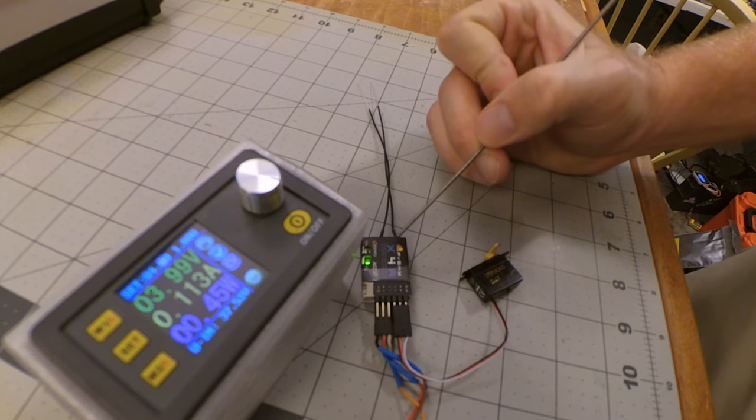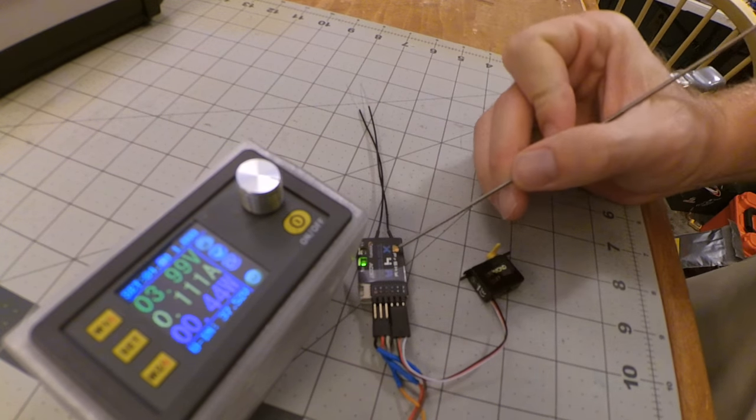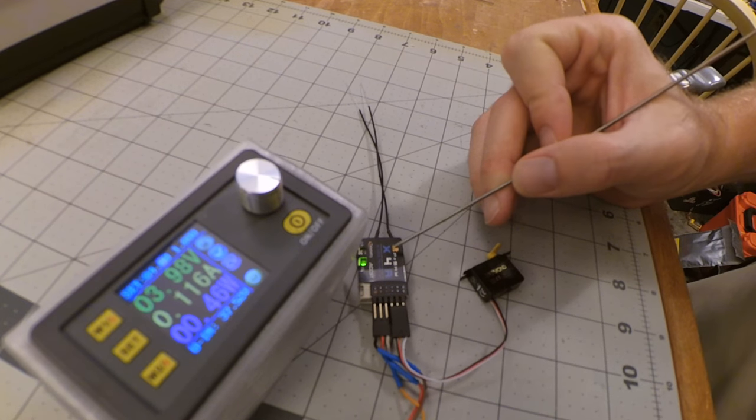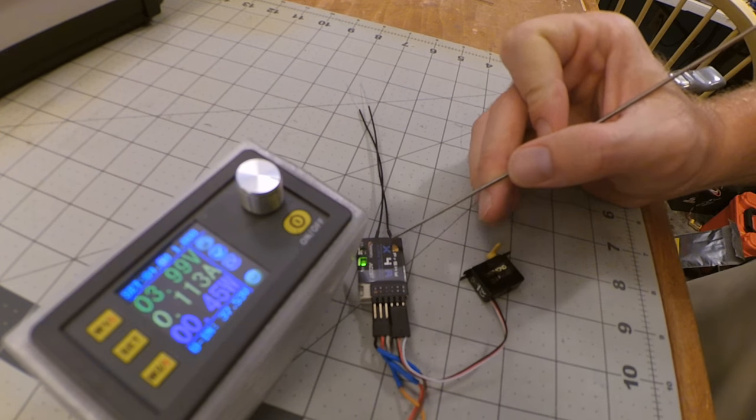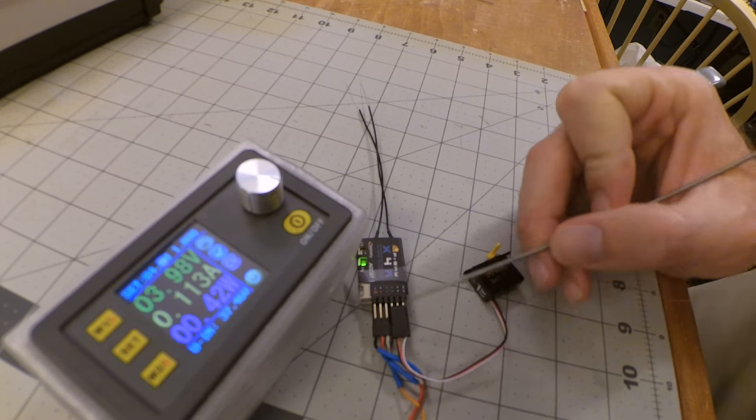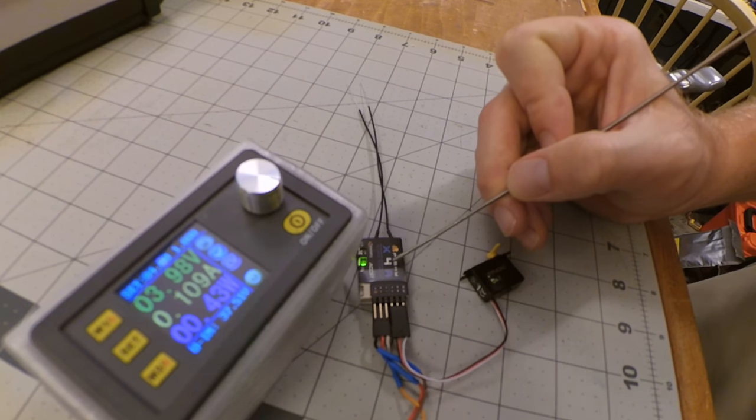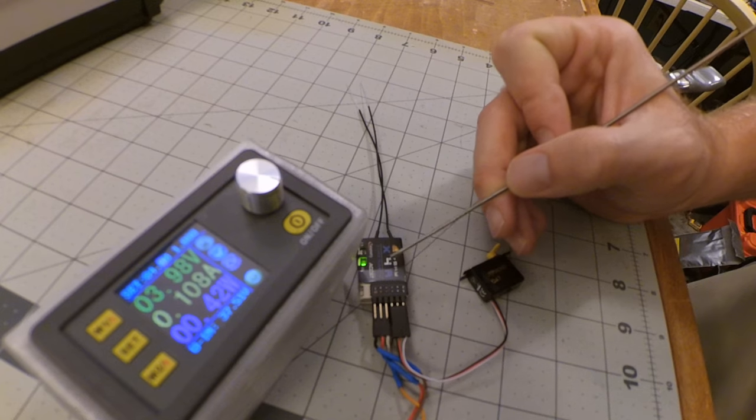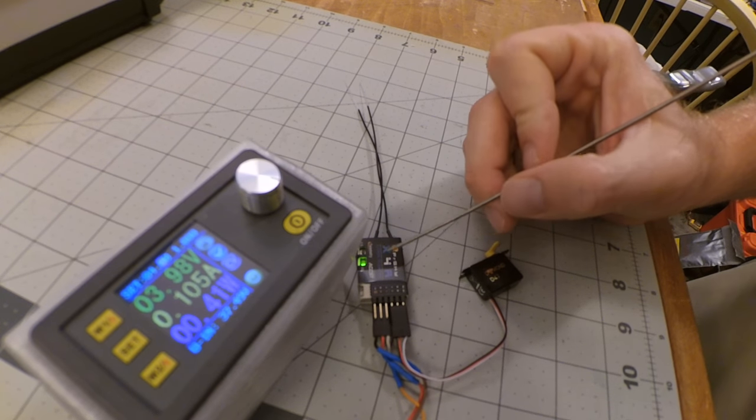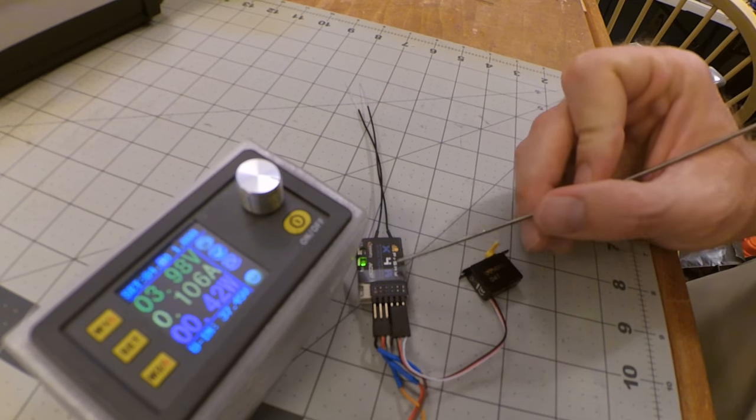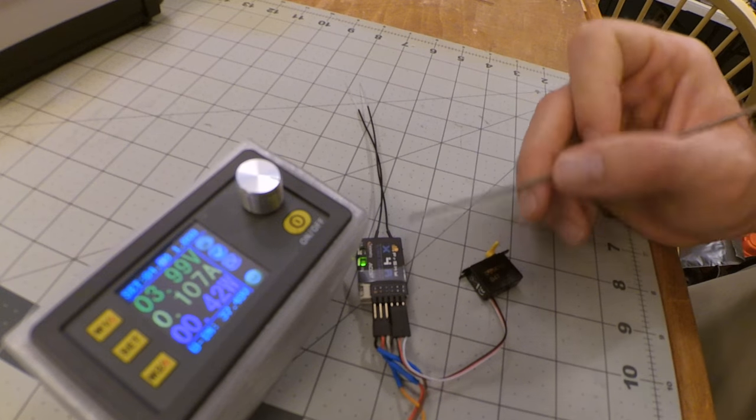So one difference between the X4R and the D4R: the D4R uses A1 telemetry for the voltage on the receiver. The X4R has a different value called RX BAT for receiver battery, and that will tell you what the current voltage is on the receiver.